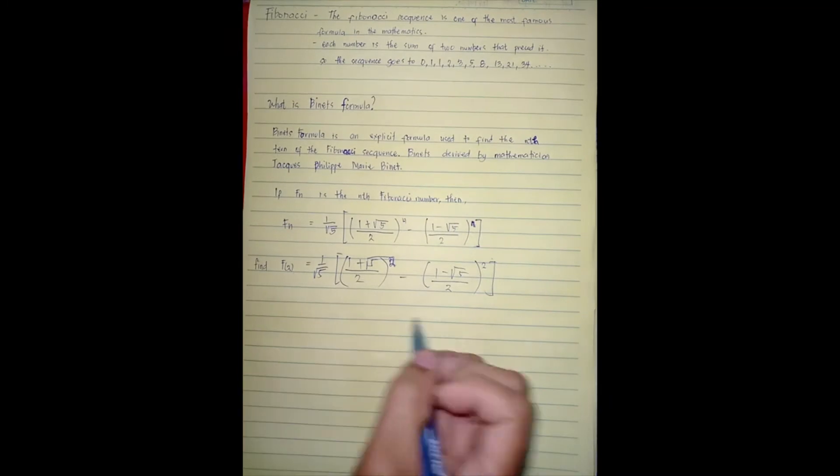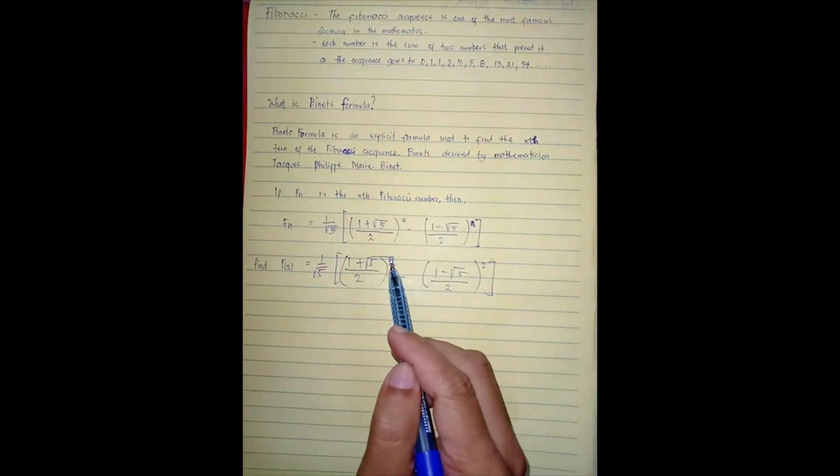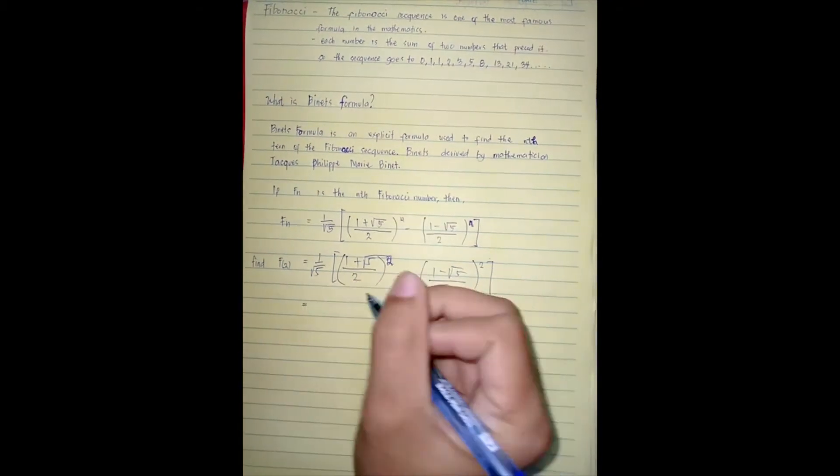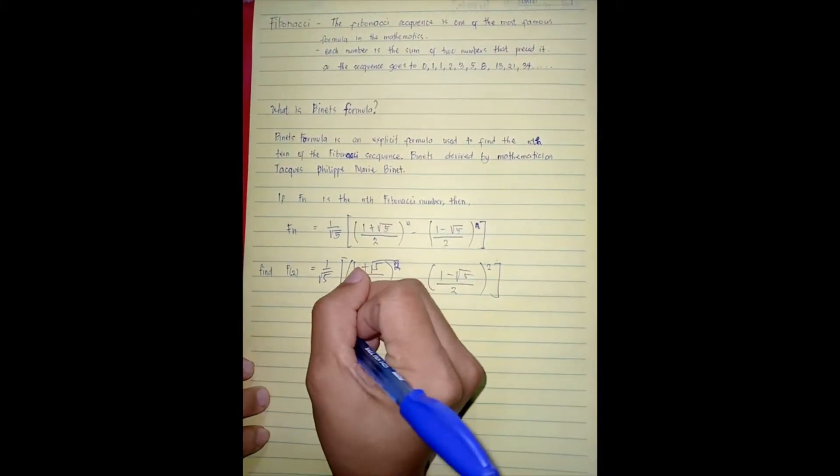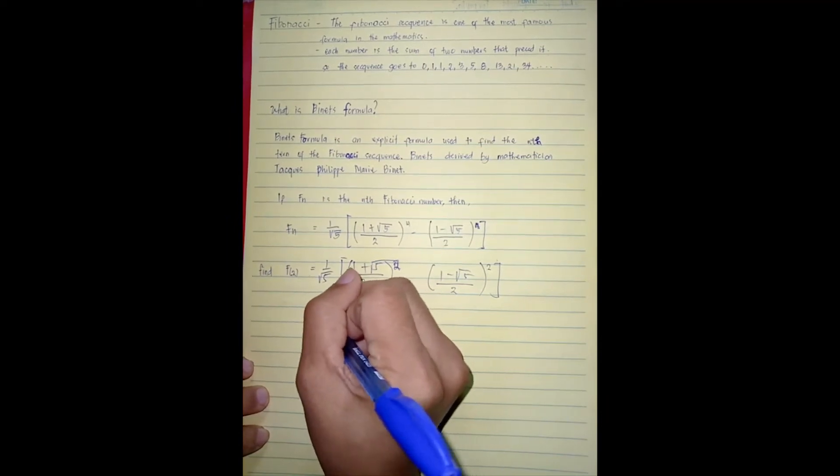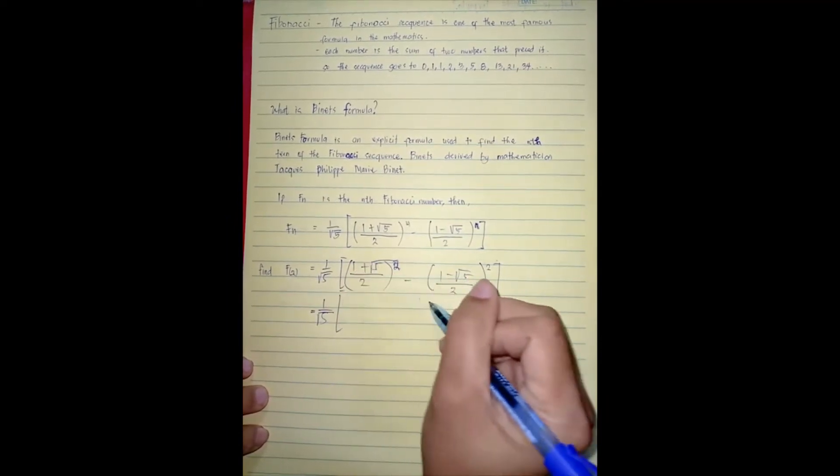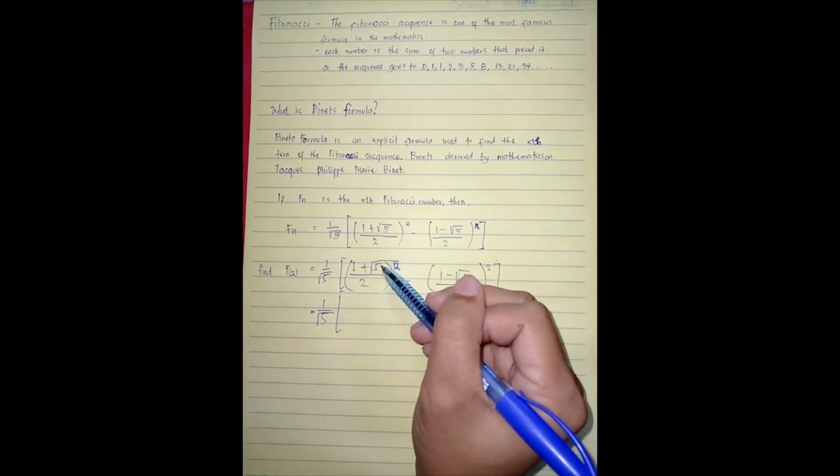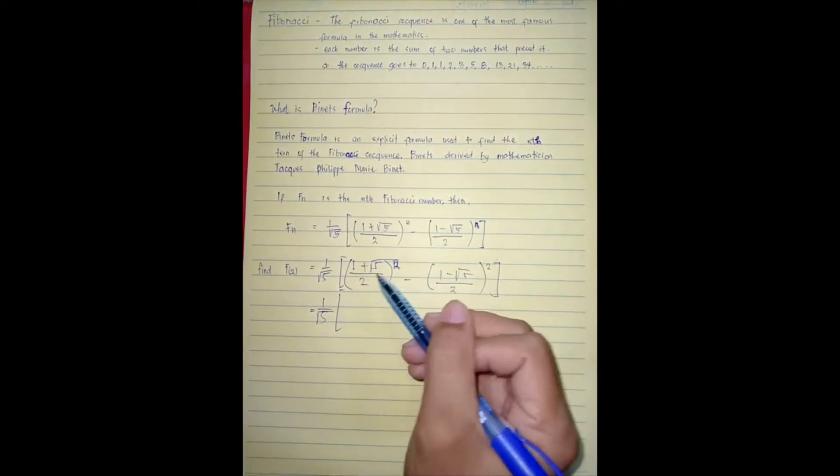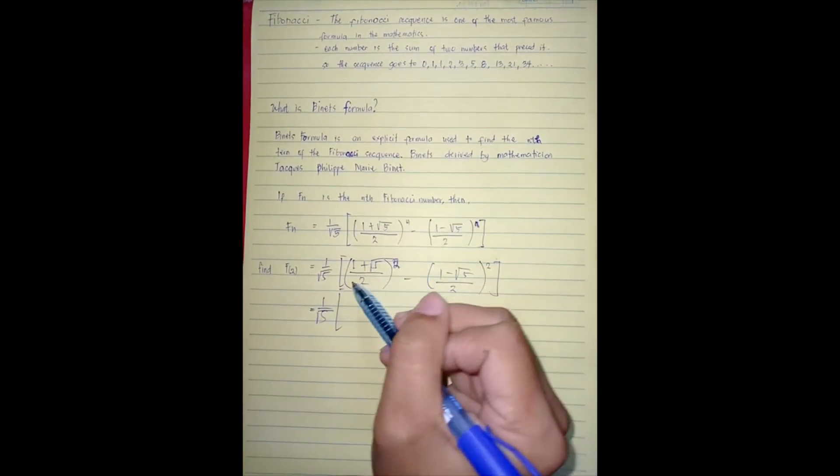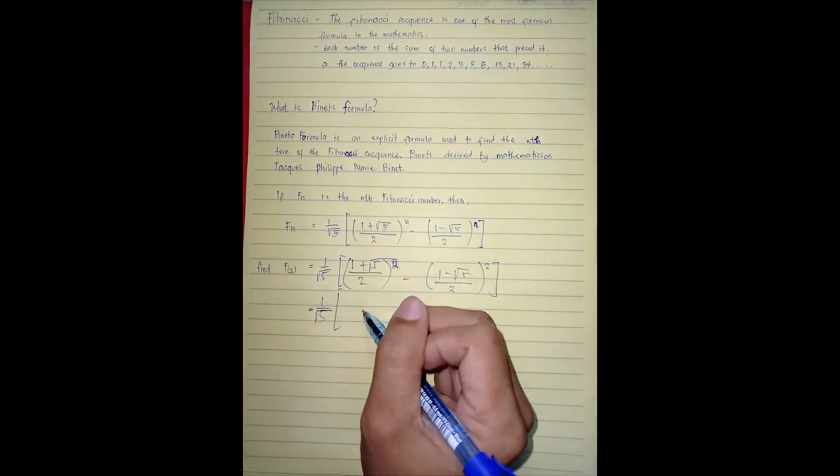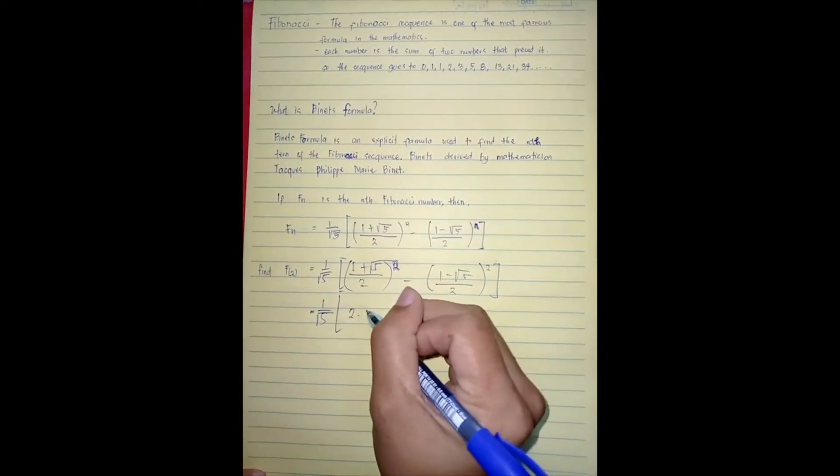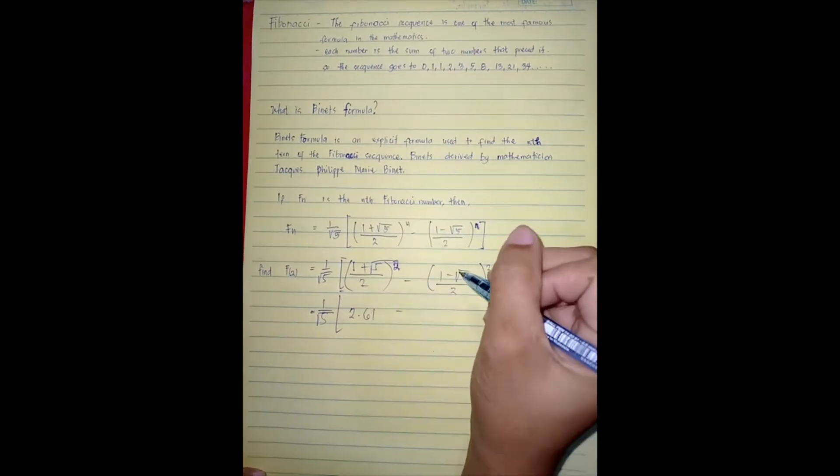So ayun na siya, deconvert na natin yung N sa 2 kasi siya yung hinahanap. So mag-proceed na tayo sa pag-answer. So ang una natin gagawin is one plus square root of five divided by two raised to, ang answer nun is i-raise natin sa two, so meron tayong nakuhang 2.61.